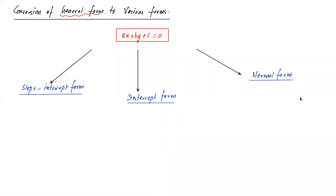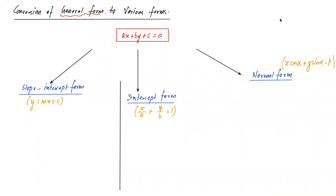To convert general form ax + by + c = 0 to slope-intercept form: keep only 'by' on the left-hand side, shift everything else to the right — getting minus ax minus c — then divide both sides by b. This gives y = (−a/b)x + (−c/b). Here, the coefficient in front of x is the slope (m = −a/b) and the constant term is the y-intercept (−c/b).